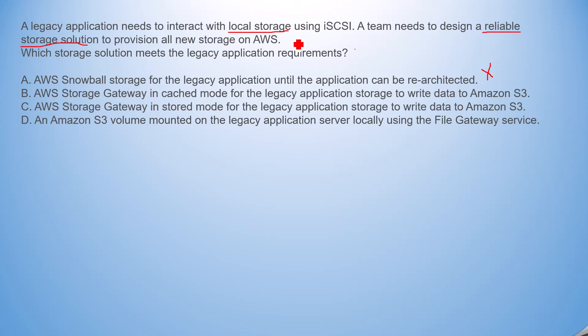The second option is AWS Storage Gateway in cached mode for the legacy application storage to write data to Amazon S3. AWS Storage Gateway provides data into AWS using a direct connector via VPC. It provides two modes: cached mode and stored mode. So options B and C could both be right — we'll jump to option D first and come back to B and C.